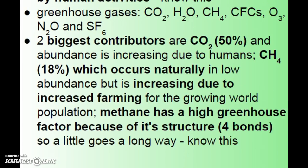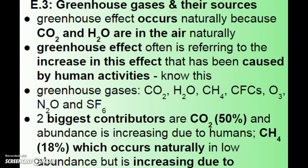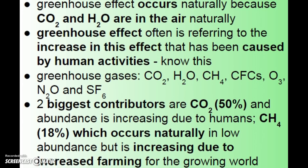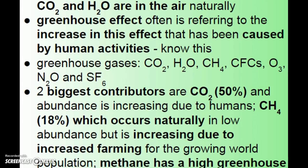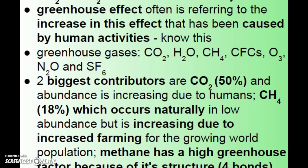The greenhouse effect does occur naturally, but what we usually mean by it is the increase in this effect caused by human activity — caused by an increase in gases like carbon dioxide, water, CH4 methane (which is actually a big one), CFCs (which have been banned), ozone, N2O, and SF6.